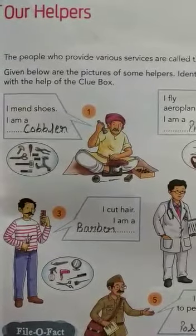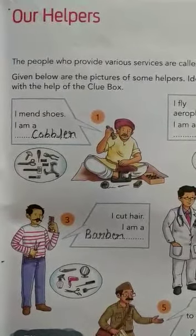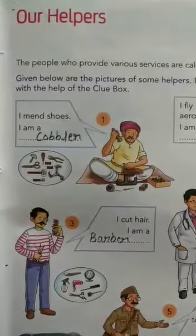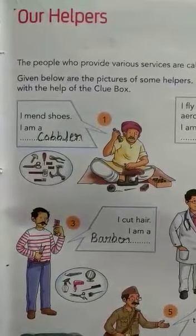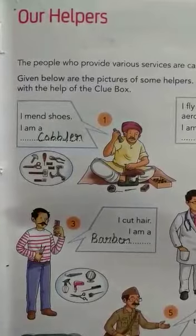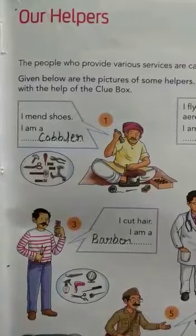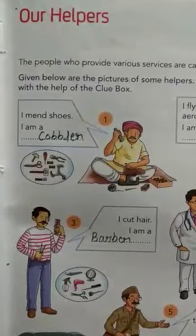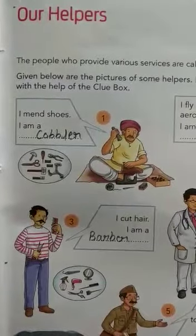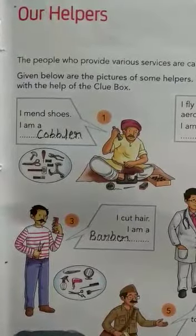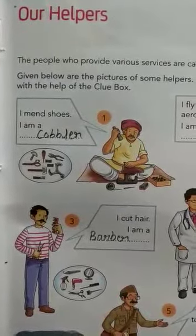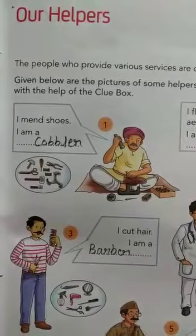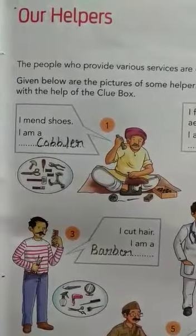The first one — there is a picture and the clue is: 'I mend shoes.' Who mends our shoes? Cobbler. So the answer is Cobbler. We write here: Cobbler. Cobbler mends our shoes.